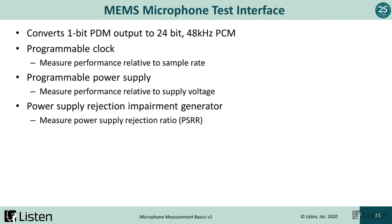The MEMS microphone test interface needs to convert the one-bit PDM stream output to 24-bit 48K PCM. It should have a programmable clock, which allows you to measure microphone performance relative to sample rate. It should have a programmable power supply so we can measure performance relative to supply voltage. And in some cases we may have a power supply rejection impairment generator so we can measure PSRR — Power Supply Rejection Ratio.